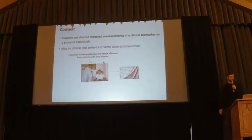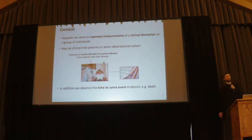So some context. We're going to be in the setting of biostatistics and suppose we observe repeated measurements of some clinical biomarker on a group of patients. So these might be clinical trial patients or perhaps some observational cohorts, such as if we have some registry-based data set. So here, for example, in the picture, we've got some patients with liver disease, and we might measure serum bilirubin and serum albumin on these liver disease patients. And rather than doing this on one occasion, we do it repeatedly over time during the course of some follow-up.